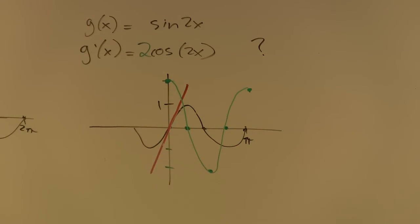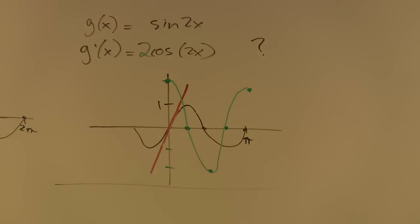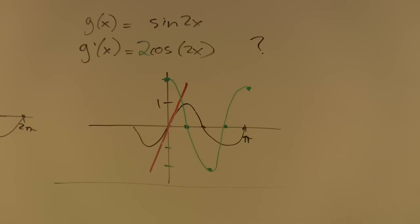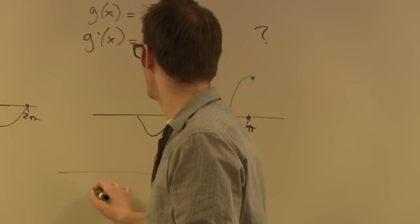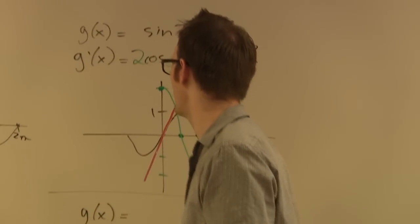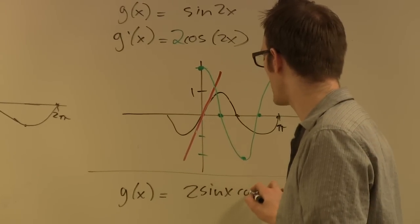Now let's confirm this is true using an indubitable technique — the double angle formula followed by the product rule. I happen to have a formula for sine 2x: the double angle formula gives sine 2x = 2 sine x cosine x.